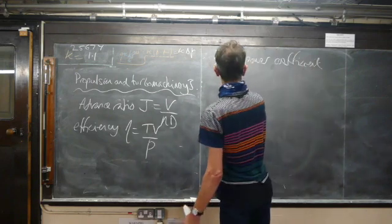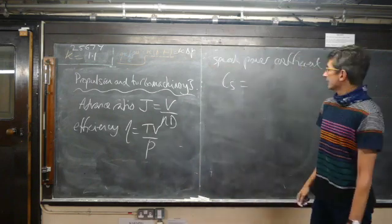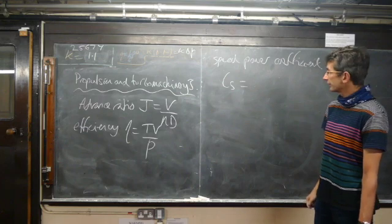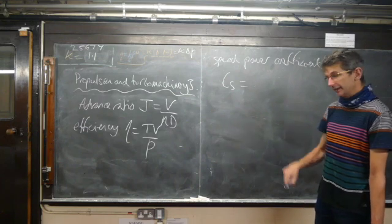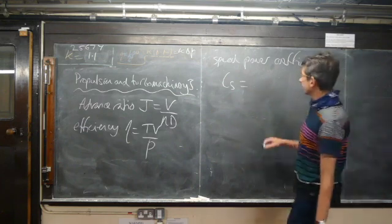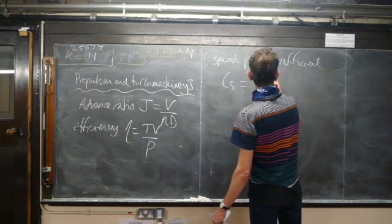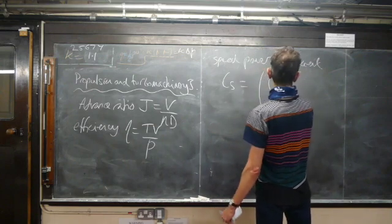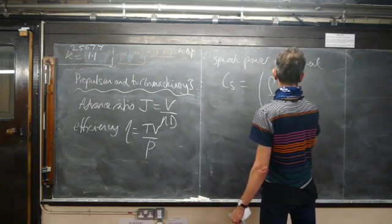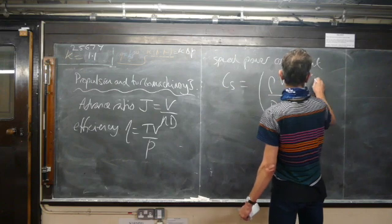CS is a non-dimensional power, but it's also got the speed in it - the flight speed. It's got the rotational speed and the flight speed in it. So it's density times speed to the power 5 over power times rotational speed squared, all to the power one-fifth.